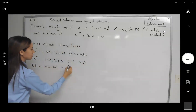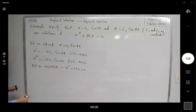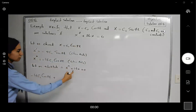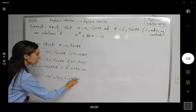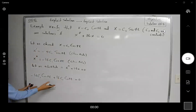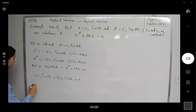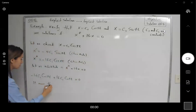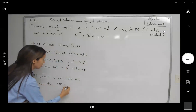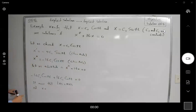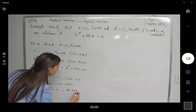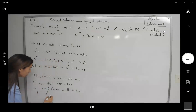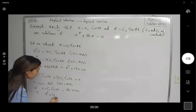Let us substitute into the second derivative of x plus 16x equal to zero. Here you get negative 16C₁ cosine of 4t, plus 16 times x. What is x? X is C sub 1 cosine of 4t. As you can see, they are opposite of each other, so it is equal to zero. Left-hand side equals right-hand side, meaning x = C sub 1 cosine of 4t is a solution of the differential equation x'' + 16x = 0.